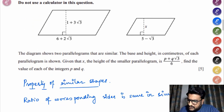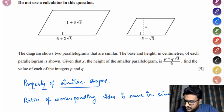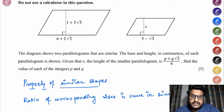Now don't use calculator in this question. This question is based on surds. What it says is the diagram shows two parallelograms that are similar, the base and height in centimeters of each of the parallelograms. Now the idea of similarity - if two shapes are similar, the ratio of corresponding sides is always same.